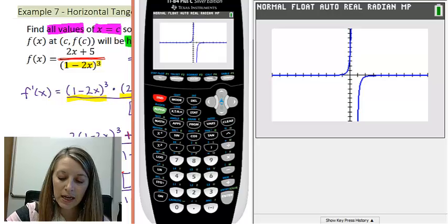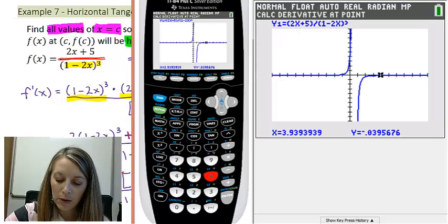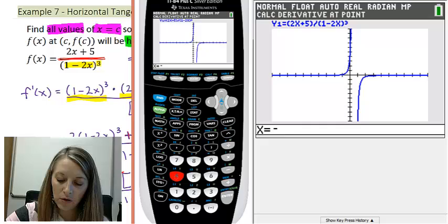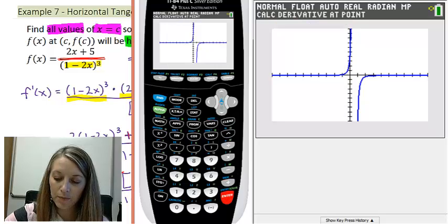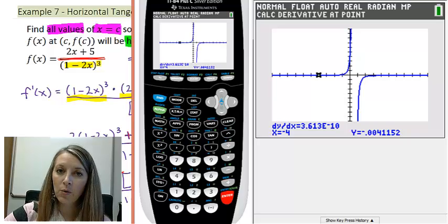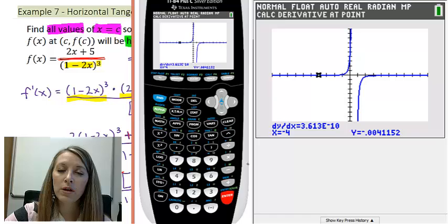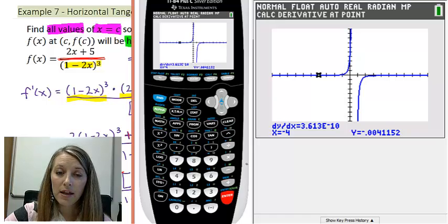We can check it one of two ways. We can just look at our derivative at the answer that we found. So we can do second trace to give us the calculate feature. Option 6 gives us the derivative or the slope. And we can plug in our value of negative 4. And this is definitely one of the places where the calculator tries to trick you. If you just look at it, it looks like 3.6. So you think, oh well we have a mistake there that we got the wrong answer.